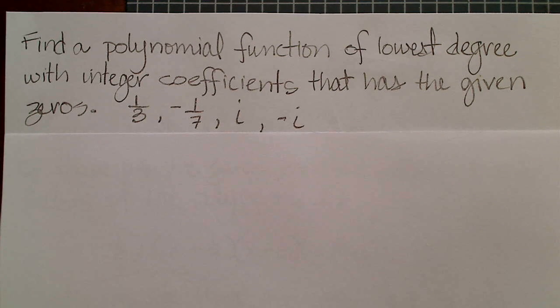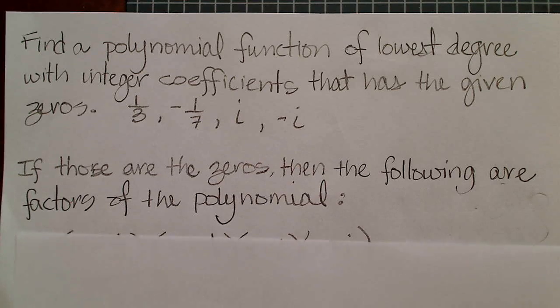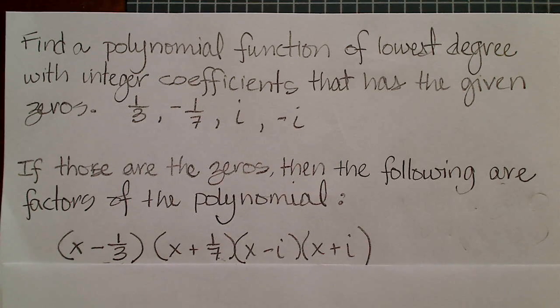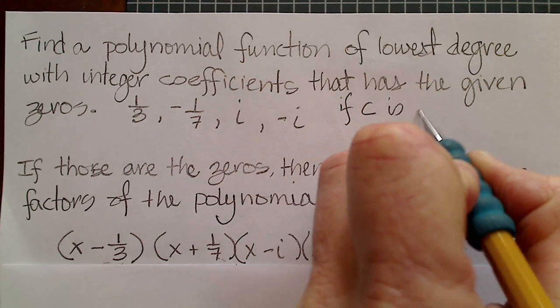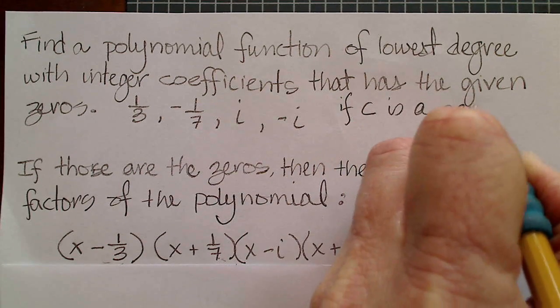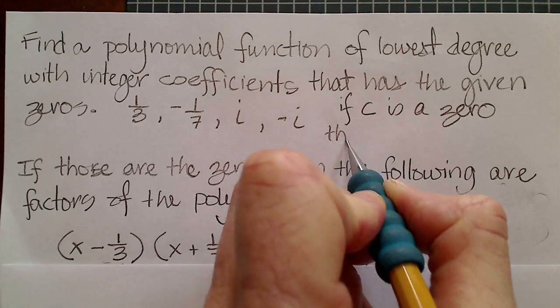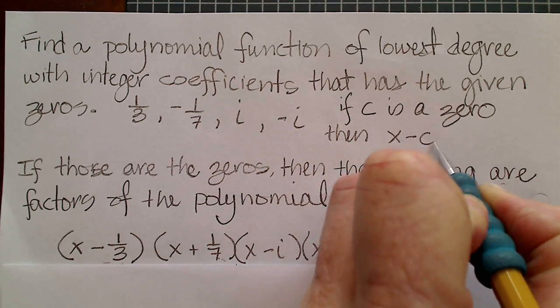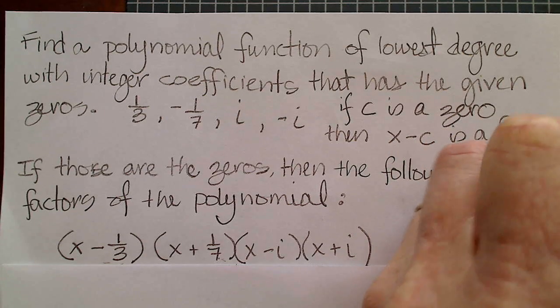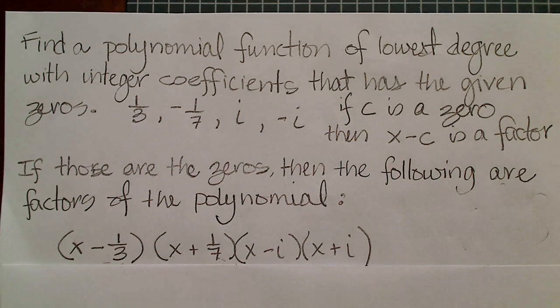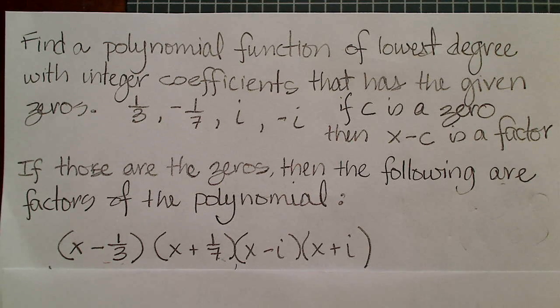So I know that if a value is a zero, then I have the following factors. In other words, if c is a zero, then x minus c is a factor. So now I have four factors that I generated from the four zeros given.